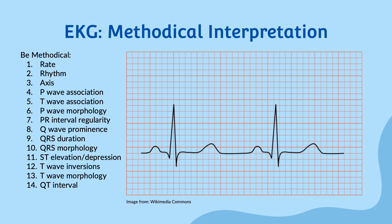We'll use the 300 rule to determine the rate here. So it looks like 300, 150, 100, 75 — so a little bit below 75 is going to be our rate.